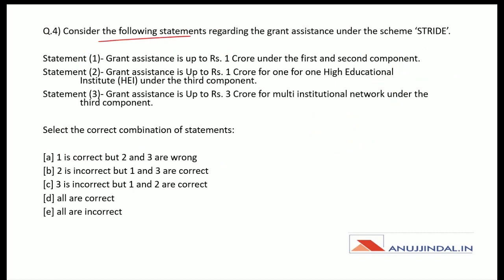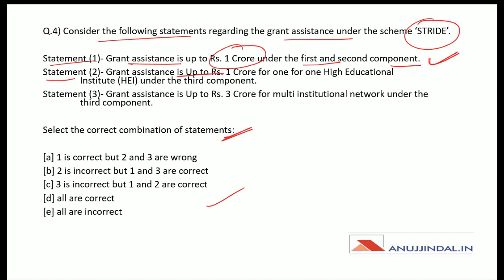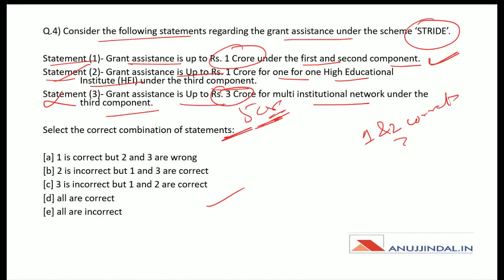Question number four: Consider the following statements regarding grant assistance under STRIDE and identify the correct combination. Statement 1: Grant assistance up to rupees 1 crore under the first and second component — correct. Statement 2: Grant assistance up to rupees 1 crore for one higher educational institute under the third component — correct. Statement 3: Grant assistance up to rupees 3 crore for multi-institutional network under the third component — incorrect, it is rupees 5 crore. So statements 1 and 2 are correct and statement 3 is incorrect.